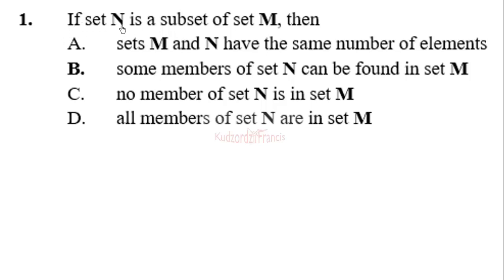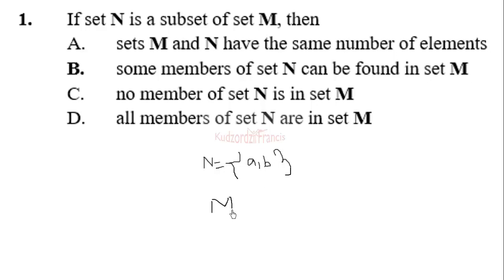If set N is a subset of set M, so we were given two sets. Let us say set N has elements a, b. Then we have set M also having elements a, b, c. You can see that set N is a subset of set M.